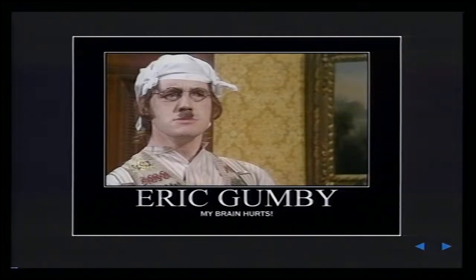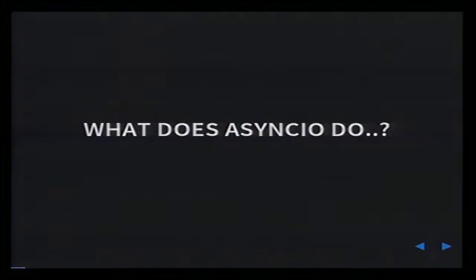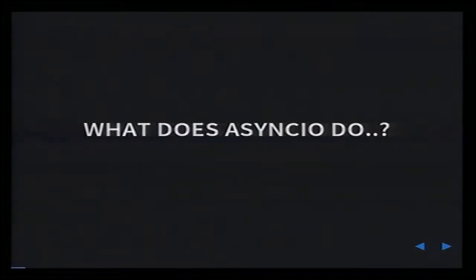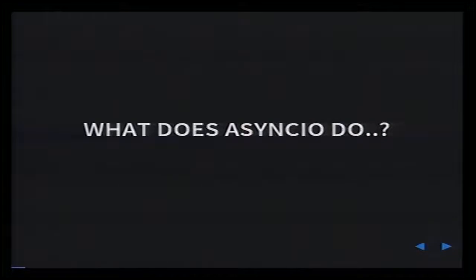I'm talking very quickly because I have rather a lot of information to give to you. So perhaps your brain will hurt by the end of this talk. The first thing that needs to be answered is: what does asyncIO do? Well, the Python docs are very clear about this. They state that this module provides infrastructure for writing single-threaded concurrent code using coroutines, multiplexing IO access over sockets and other resources, running network clients and servers and other related primitives.